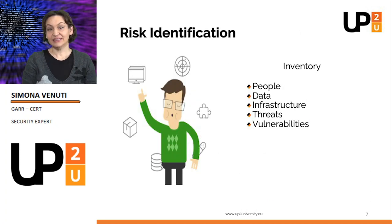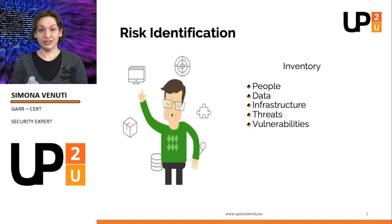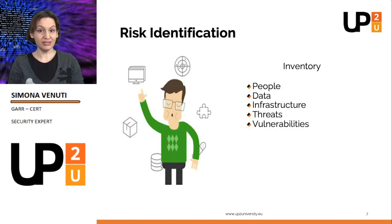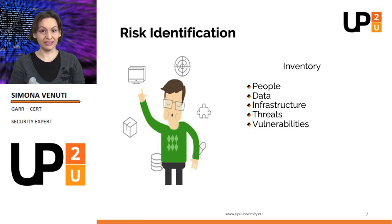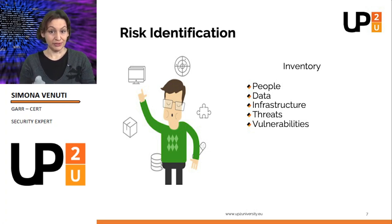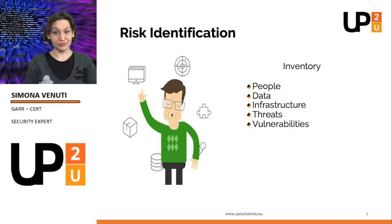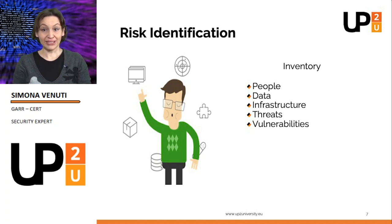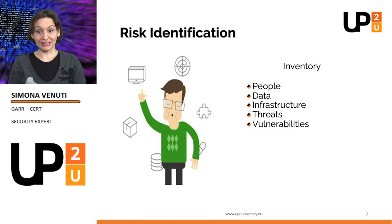Risk identification. The organization identifies and documents all its assets. We should make a documented inventory of people — who is doing what? — and data — what are the important data we want to preserve and protect?